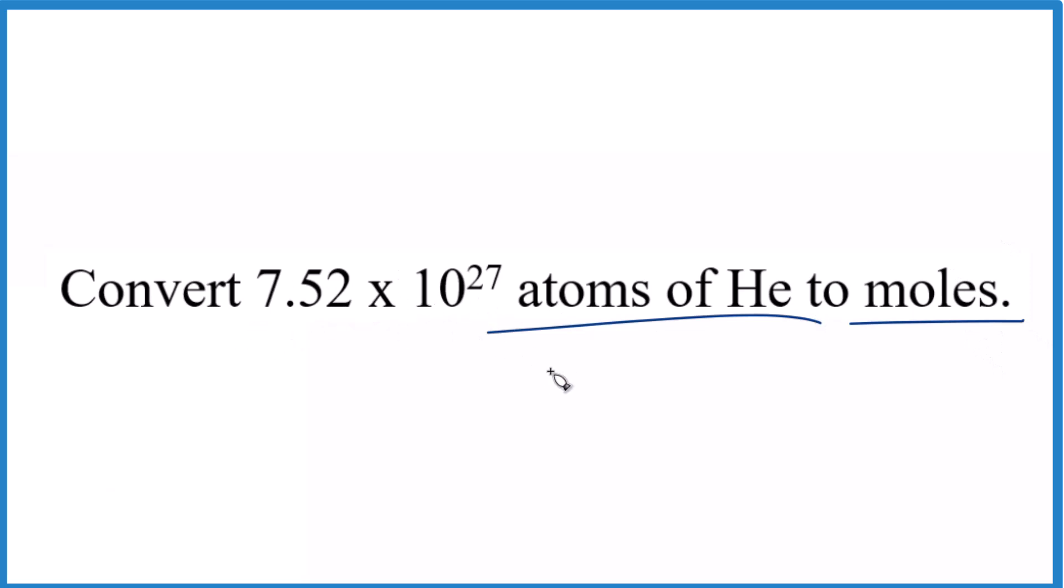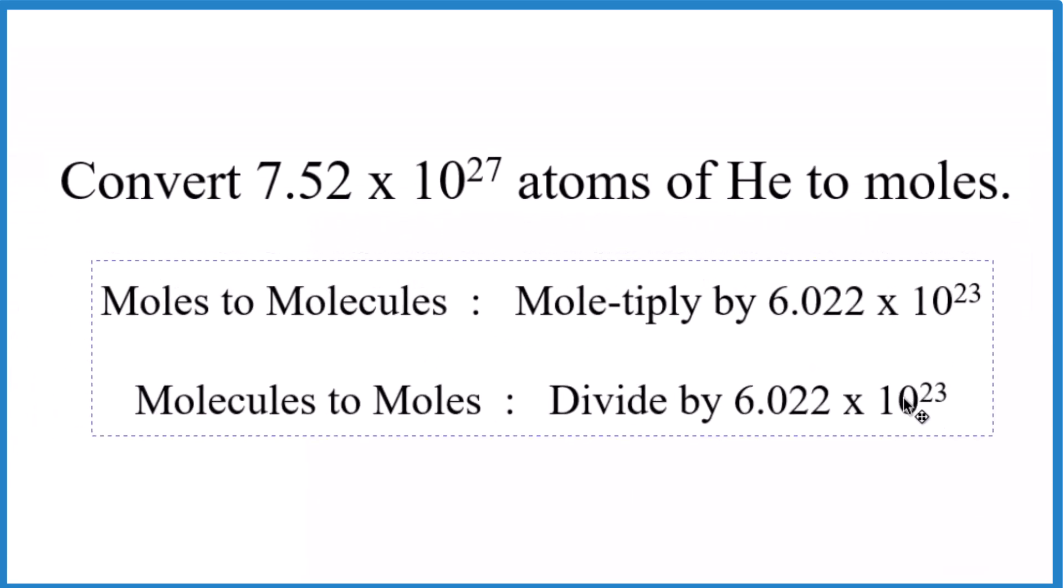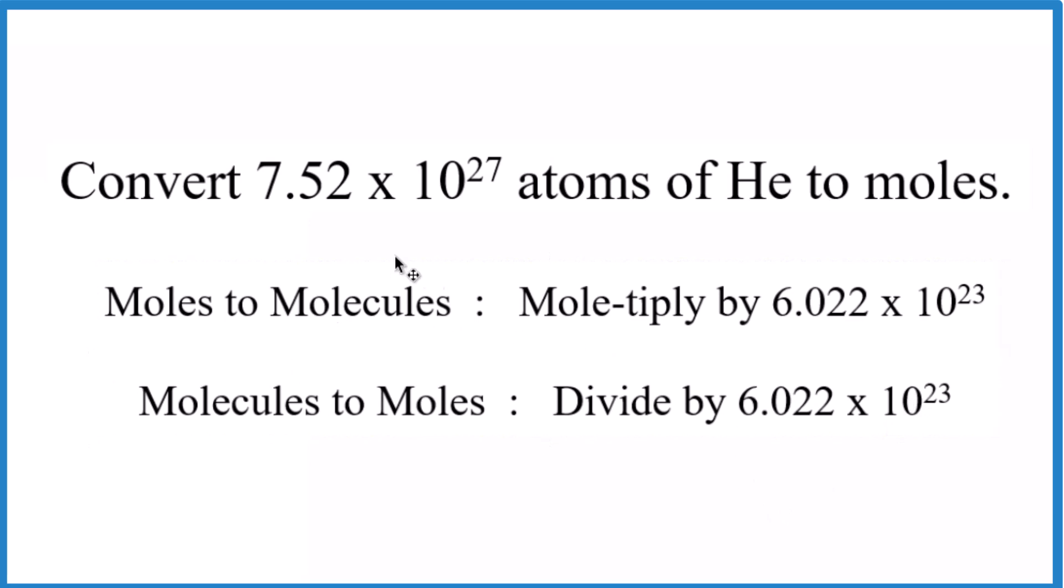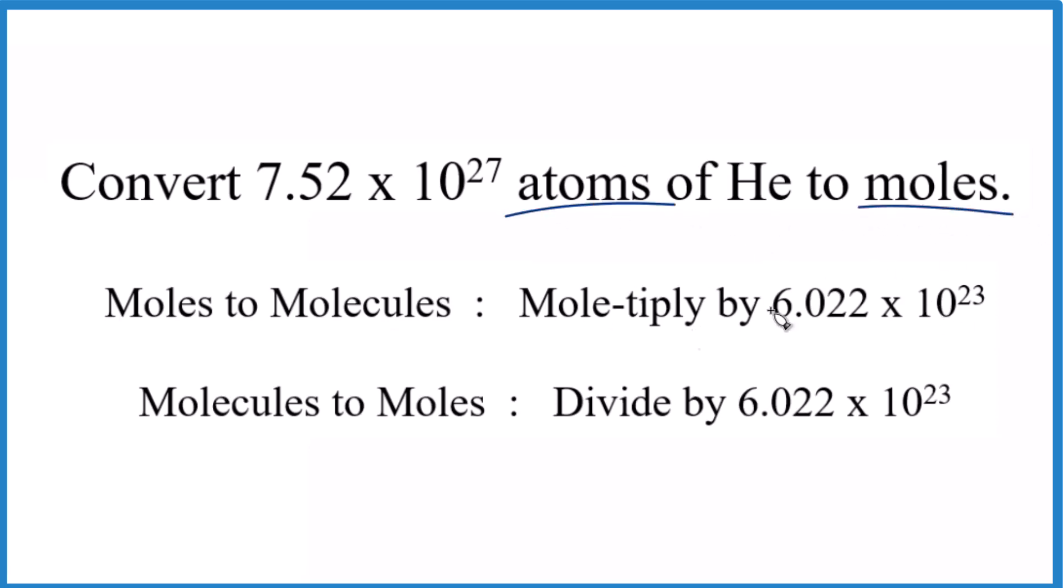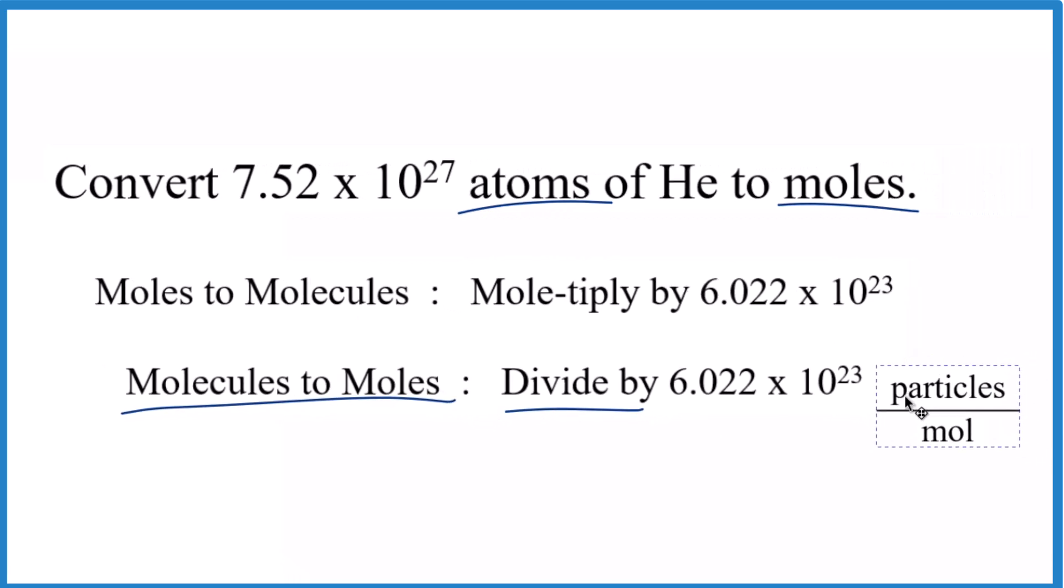It's helpful to think of this mnemonic when changing from atoms to moles or molecules to moles. If you're going from moles to molecules or moles to atoms, you multiply by Avogadro's number. But we're starting with atoms, so to get atoms to moles - or molecules, atoms, particles to moles - we divide by Avogadro's number, and the units are particles per mole.